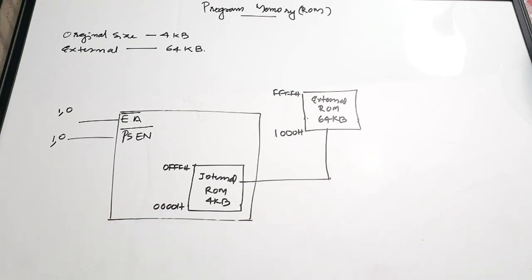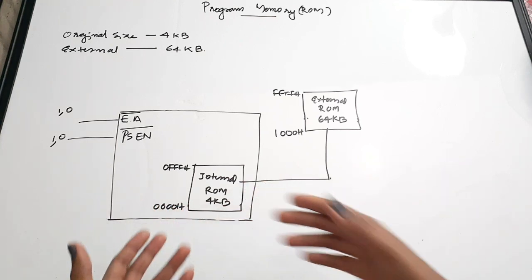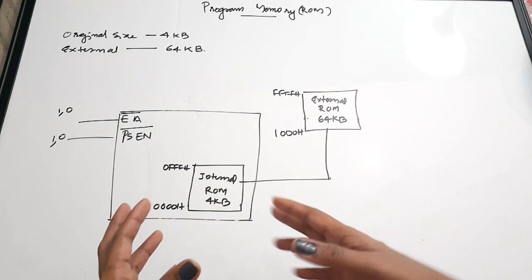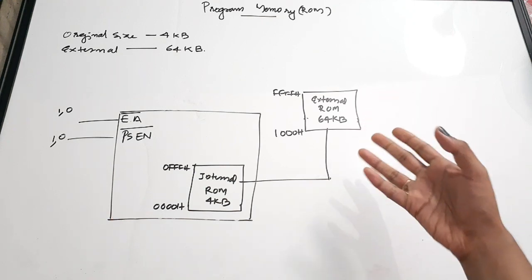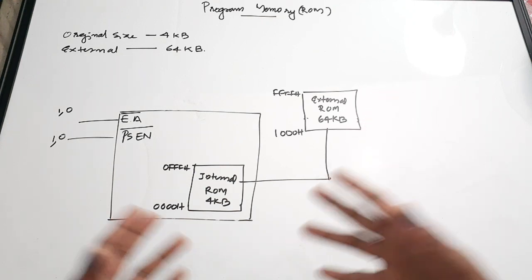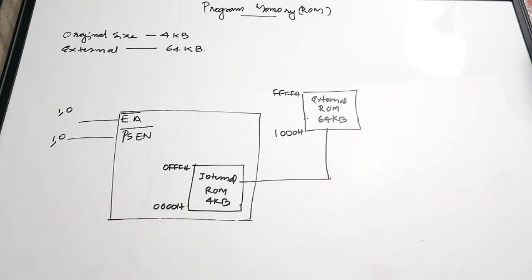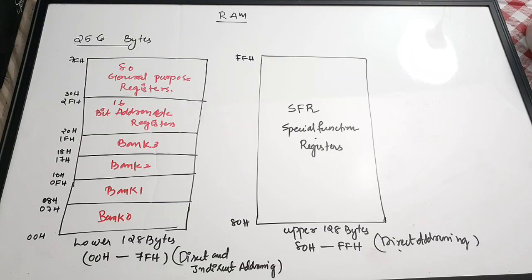To summarize, the size of the internal ROM is 4KB and the external ROM size is 64KB. The ROM is extendable — you can use external ROM to extend the ROM size.